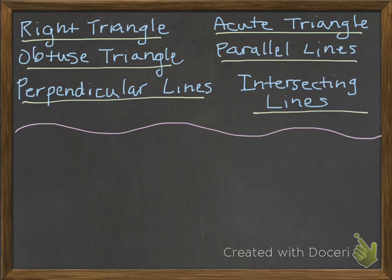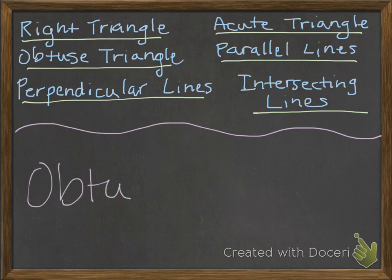Here's another one: a triangle with one angle greater than 90 degrees. If you said obtuse triangle, you are correct.